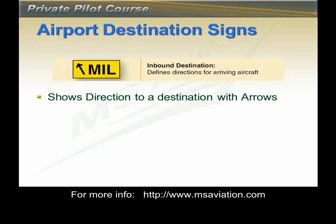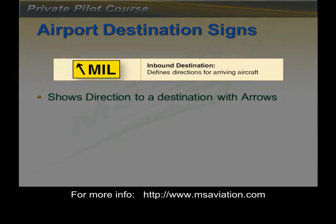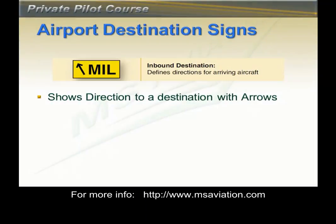Airport destination signs look like the one in this slide. This particular sign says that MIL is to the left, which is usually a military area on the airport. These signs are often abbreviated and there are no standard abbreviations. They are installed either on the left or right of the taxiway depending on where the facility is.